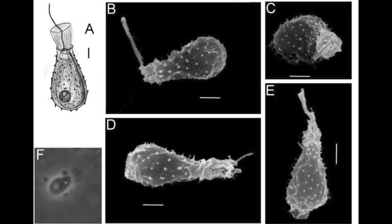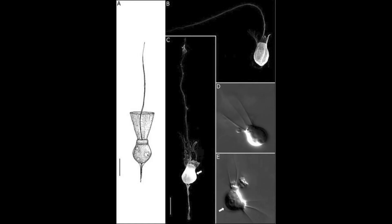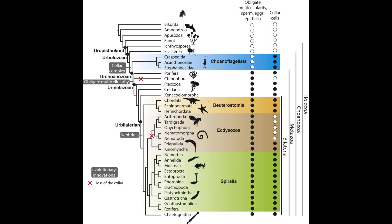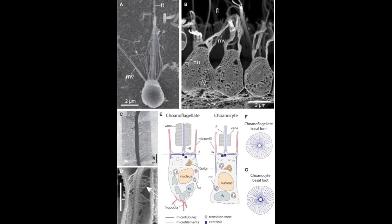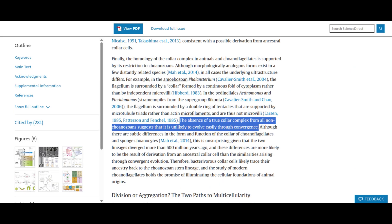Choanoflagellates are found in marine and freshwater environments worldwide from the Antarctic to the Atacama Desert. Finding aquatic protozoans in the usually deadly hypersaline bodies of the Atacama Desert came as quite a surprise to researchers, especially since those waters are also exposed to toxic heavy metals and extreme ultraviolet radiation. But life finds a way. Despite the collar complex existing in choanoflagellates and most animal clades — except for ctenophores and a secondary loss in ecdysozoans — some researchers have argued that the collar complex of choanoflagellates and animals is convergent, not homologous. This argument is based on some subtle ultra-structural form and function differences between choanocytes and choanoflagellates. However, as Brunette and King point out, "the absence of a true collar complex from all non-choanozoans suggests that it is unlikely to evolve easily through convergence."